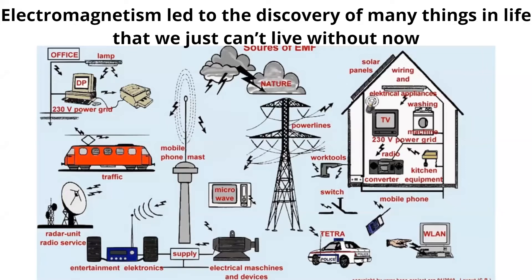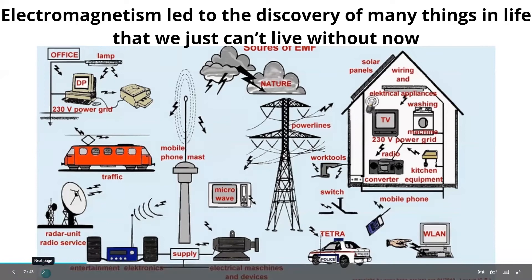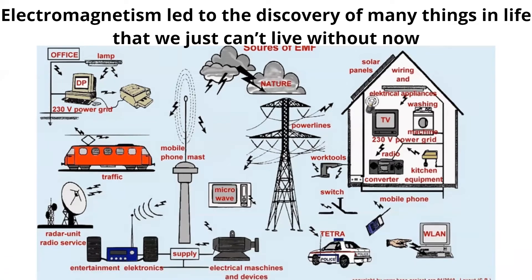You can see a diagram showing all the areas where we have the electromagnetism concept in daily life. In my home I have solar panels, wirings, electrical appliances, washing machines, kitchen equipment, mobile phones, radar units, entertainment equipment, and office power grid systems — everywhere we are using this concept. But we never think about electricity or magnetism while using our mobile phone or other devices. This is the basic physics and the foundation of all the inventions we are using now.